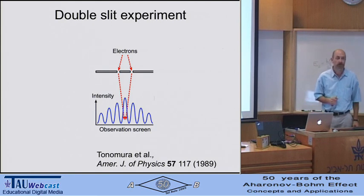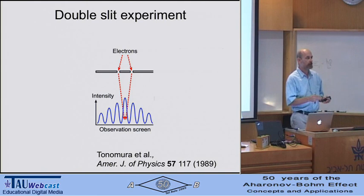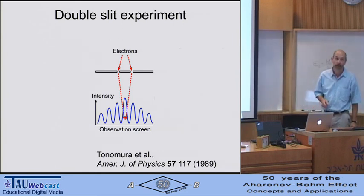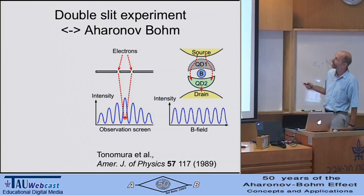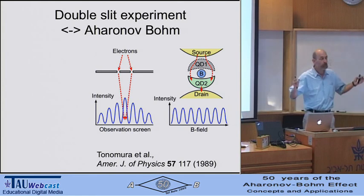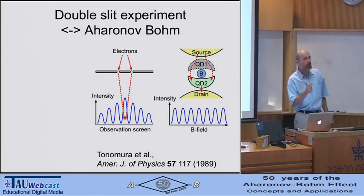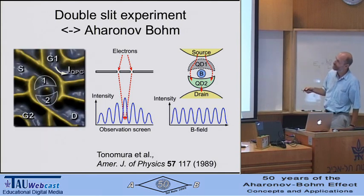It would be very nice to do a similar experiment in solid-state physics, but the problem is the observation screen—typically you can measure some intensity of electrons, but you cannot have many different sources or detectors simultaneously. The solution is the Aharonov-Bohm effect. In our schematic setup, we have a source of electrons, a drain, and two possible paths for the electrons—two quantum dots—and then a special tool that allows us to monitor the flow of electrons through the device.